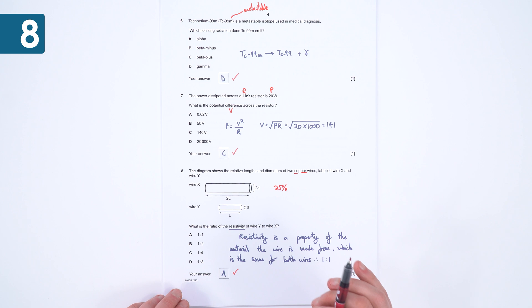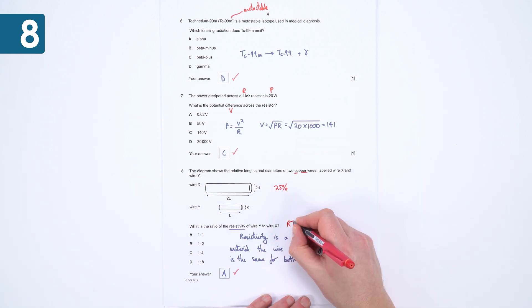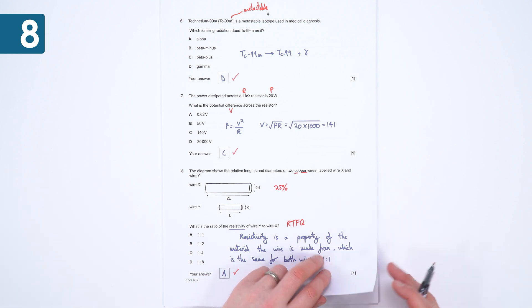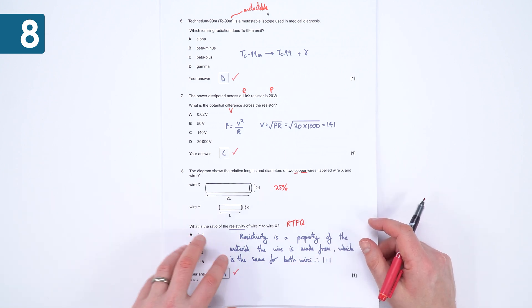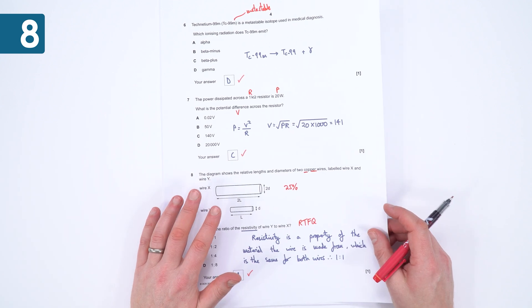I think that was a good example of where you need to read the full question and make sure you're not answering what you think it's going to be asking, but you're actually answering what it's asking you. So number eight was particularly tricky because only 25% of the population got this correct, but everybody, when it's explained to them, knows what the correct answer is.